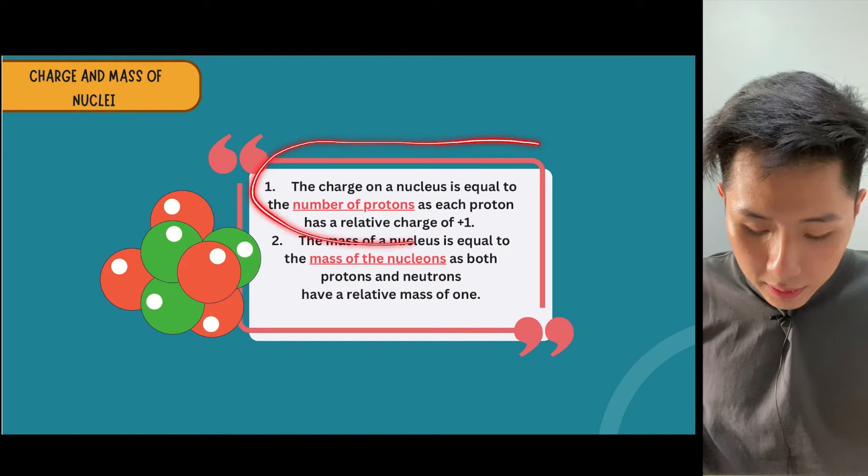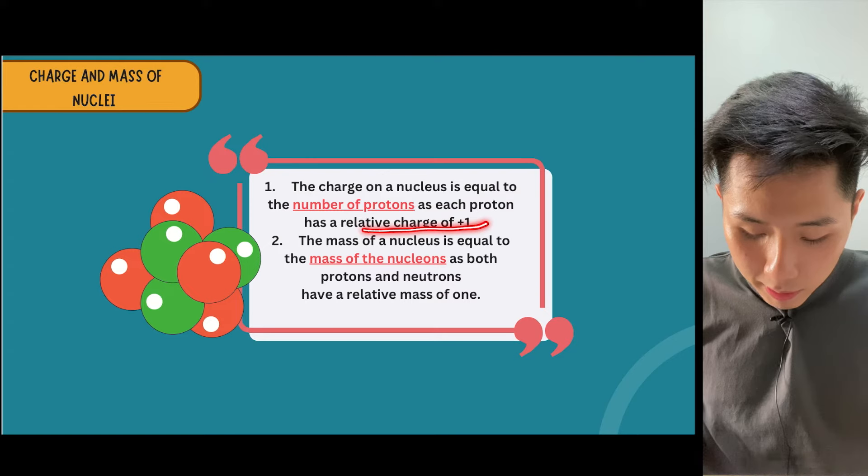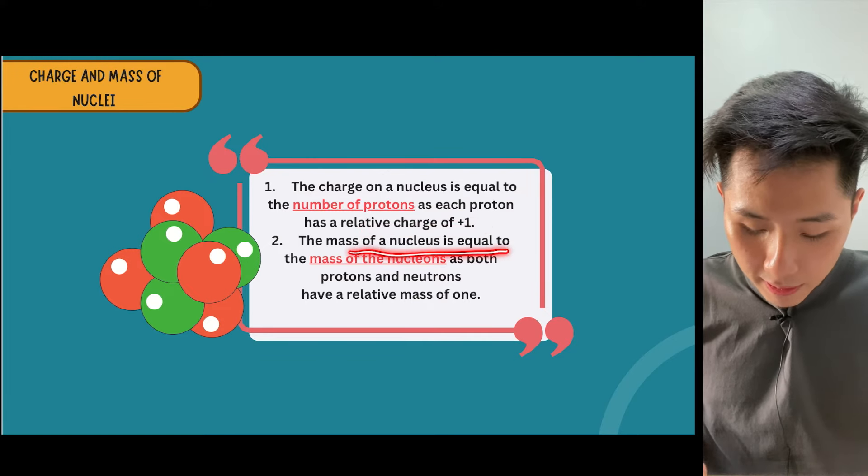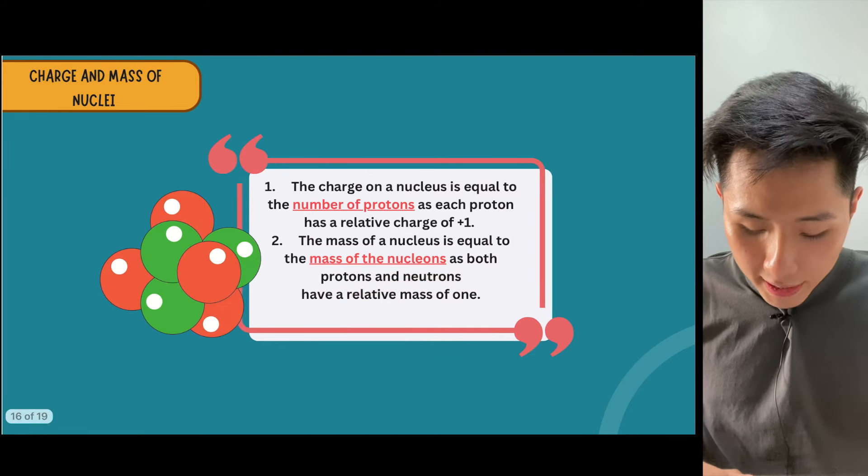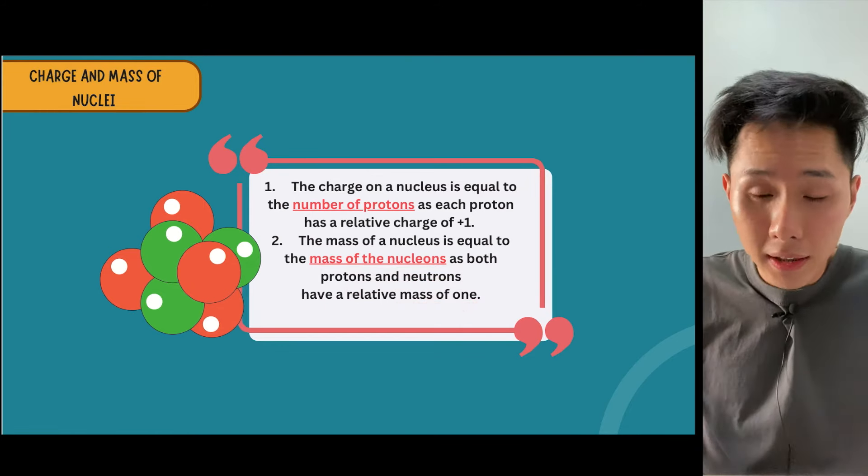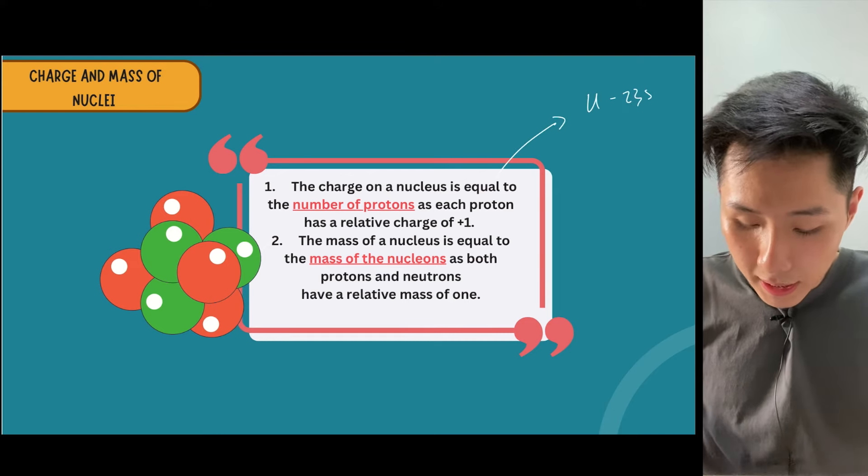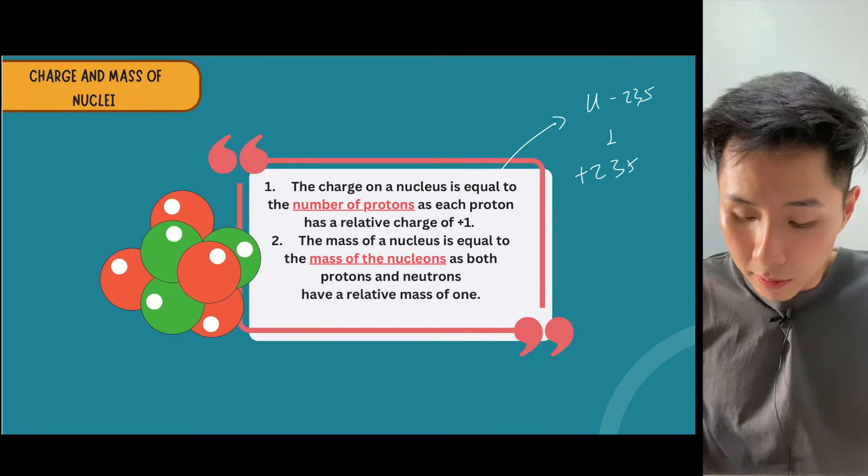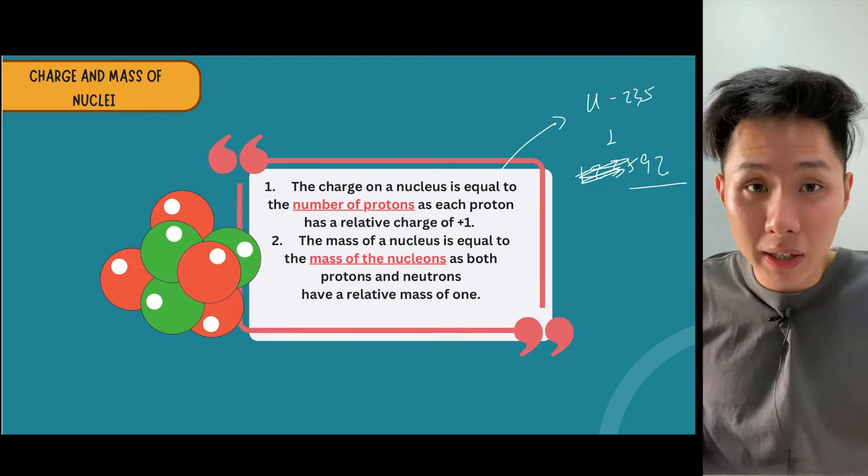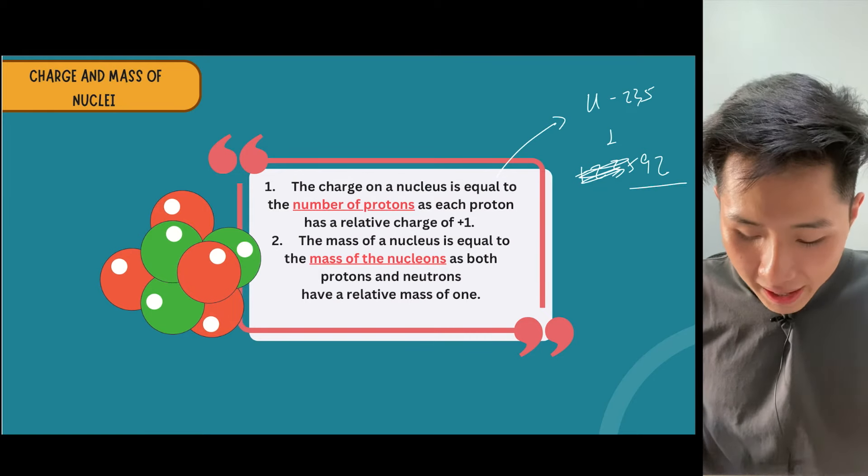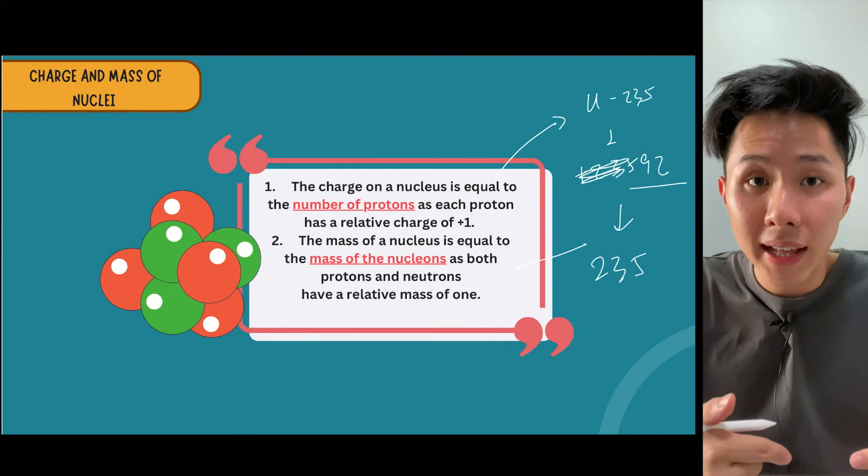The charge on the nucleus is equal to the number of protons, with a relative charge of plus 1. The mass of the nucleus equals the mass of the nucleons, as both protons and neutrons have a relative mass of 1. If I have uranium-235, it has a charge of plus 92 because it has 92 protons, and the mass will be 235 because that's the amount of nucleons it has.